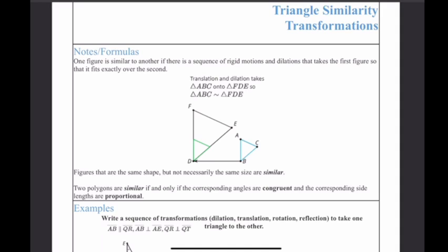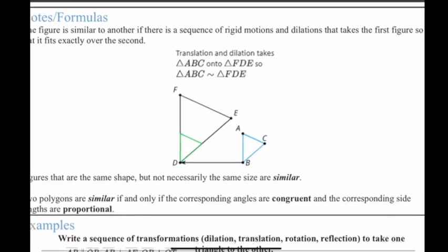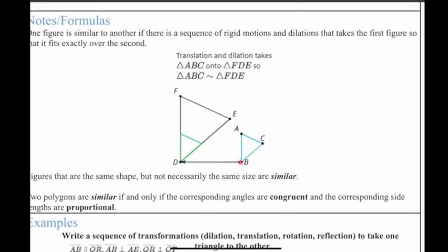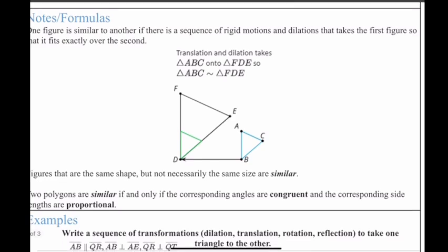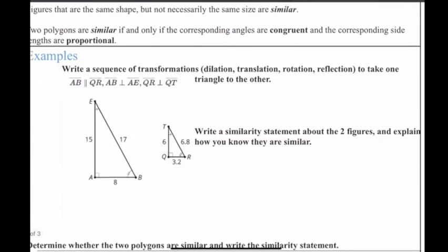On my screen right now, focus on the little blue triangle. If I translate it to the left, it'll match with the green triangle. So a translation and a dilation takes triangle ABC onto the big triangle FDE, which means you can say those two triangles are similar to each other.